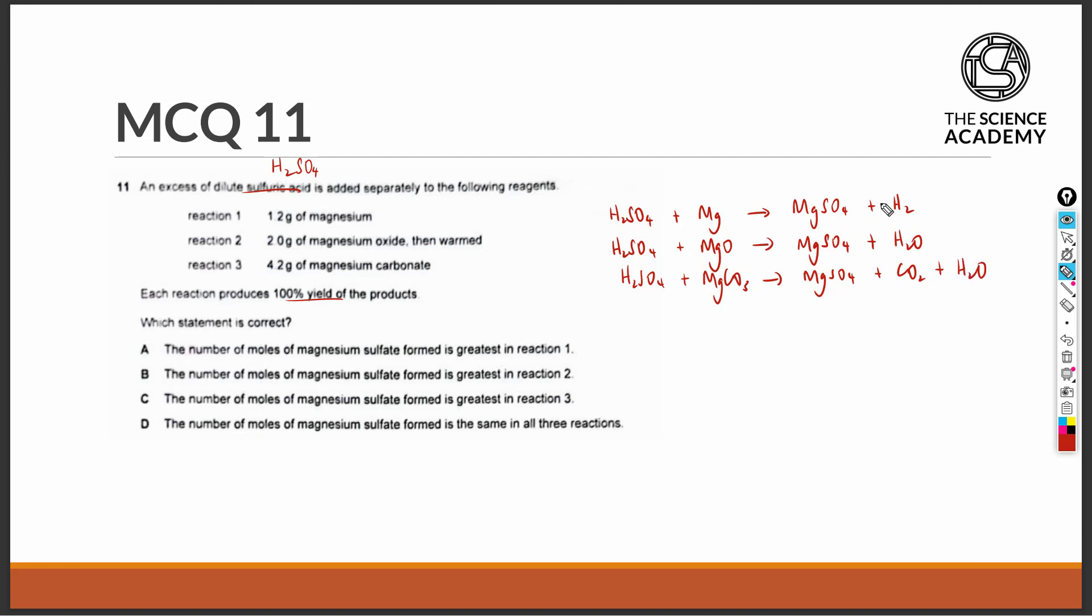All the reactions are balanced. Since dilute sulfuric acid is added in excess, the amount of products formed will only depend on the amount of reagent that is limiting, which will be the second reactant in all of the reactions.